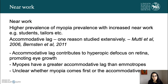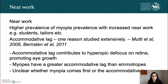There is some evidence of a higher prevalence of myopia with increased near work — for example, in students and tailors. Accommodative lag has also been studied extensively: it contributes to hyperopic defocus on the retina, which promotes eye growth. Myopes have a greater accommodative lag than emmetropes. However, it remains unclear whether myopia comes first or the accommodative lag — it's a bit like the chicken and the egg.